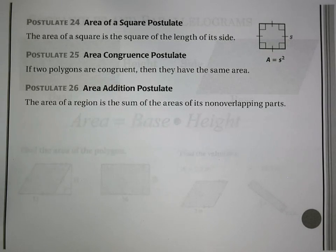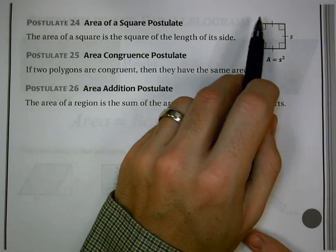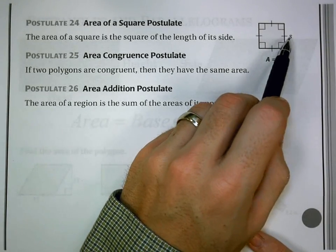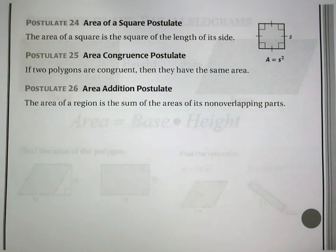The first one is the area of a square is the square of the length of its side. So if I have a square, I know all the sides are the same, I have right angles, so I could square the side length because they're all the same side length, and I'd get its area.